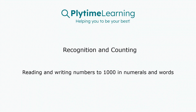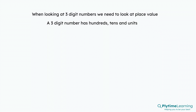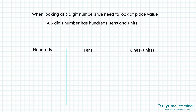Recognition and Counting: Reading and Writing Numbers to 1000 in Numerals and Words. When looking at three digit numbers, we need to look at place value. A three digit number has hundreds, tens and units — hundreds, tens and ones or units in our columns.